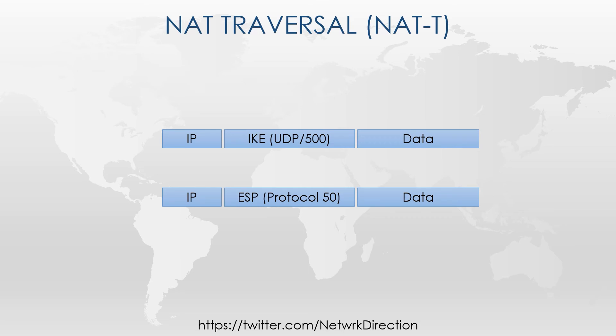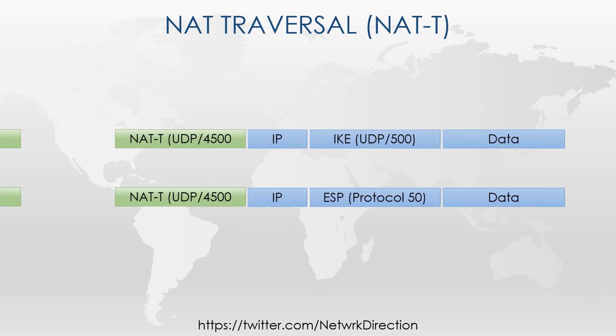We're just focusing on how it works with IPsec in this video. IKE will use UDP on port 500. ESP uses protocol 50, which means it's not using TCP or UDP — it's an independent protocol. NAT-T takes the entire packet and wraps it in UDP using port 4500.